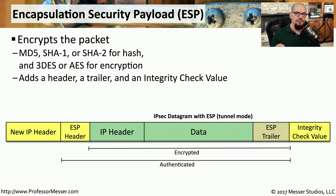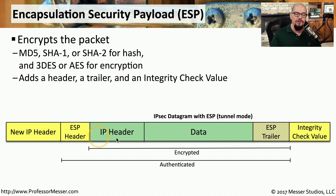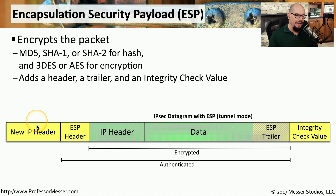We also want to be sure that the information we're sending across the network is encrypted, and we're able to do that by using the Encapsulation Security Payload, or ESP protocol. There are a number of different mechanisms to provide this encryption, and you can usually configure the method you'd like to use on your IPsec concentrator. This will provide encryption of your IP header, your data, and the ESP trailer, and it will authenticate everything sent from the ESP header all the way through to the ESP trailer. In tunnel mode, it also adds the new IP header on the front, and there is an integrity check value on the end to ensure that the packet is received properly on the other side.